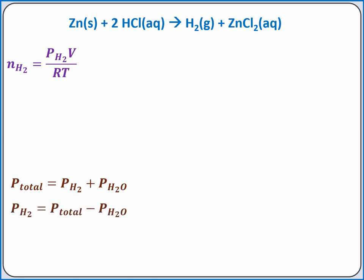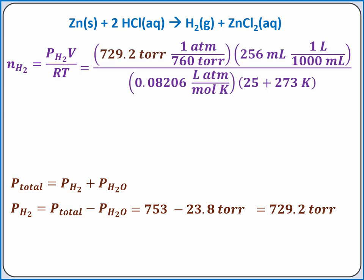Rearranging this equation to solve for the partial pressure of hydrogen gas and substituting in our values from the problem, we get 729.2 torr. We can substitute this into our ideal gas law equation, but we need to convert it from torr to atmospheres using 1 atmosphere equals 760 torr. We also need to convert our volume from milliliters to liters, and temperature from degrees Celsius to Kelvin. Completing the calculation, we should get 0.01004 moles of hydrogen.